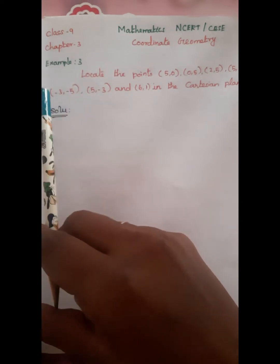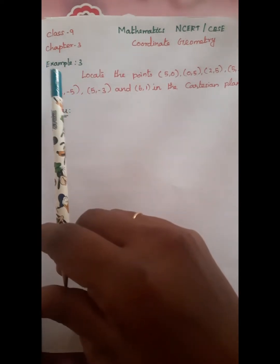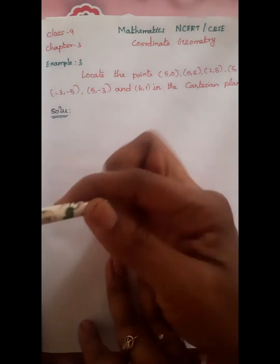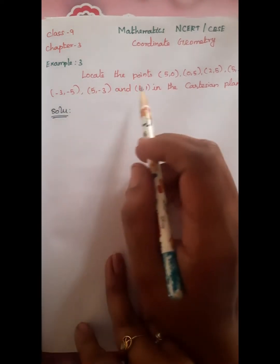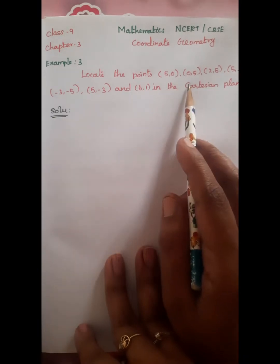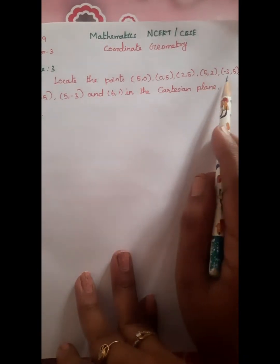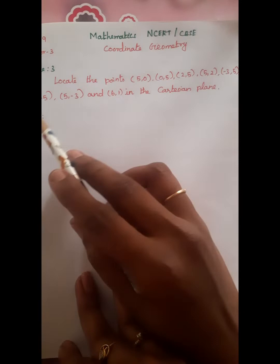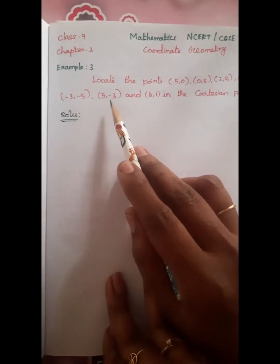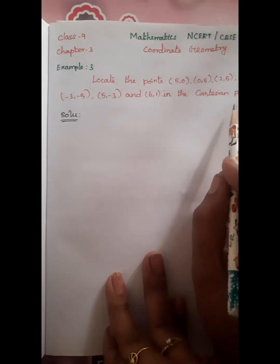Example 3: Locate the points (5,0), (0,5), (2,5), (5,2), (3,5), (-3,5), and (6,1) in the Cartesian plane.